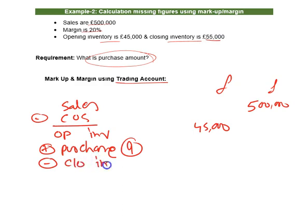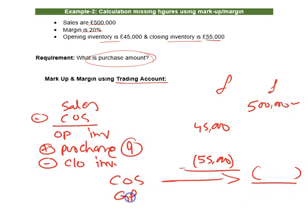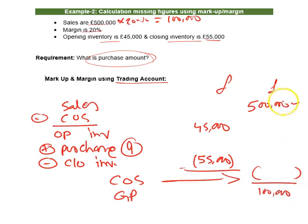Closing inventory is fifty-five thousand. Please write the full words in the exam. From sales, we deduct cost of sales to get gross profit. Margin is 20%, so 20% of five hundred thousand gives us one hundred thousand — that is your gross profit.